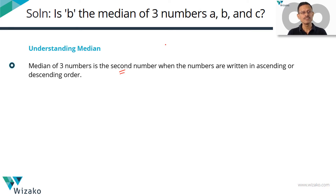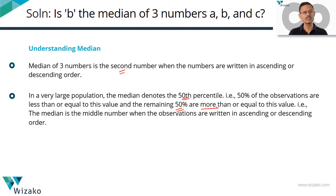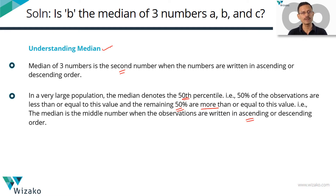What if we have more than three numbers? If you have a large population, the 50th percentile value gives us the median. It tells us that 50% of the observations are less than or equal to the median, and another 50% are more than or equal to the median. In general, the median is the middle value when you write numbers in ascending or descending order.